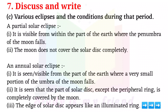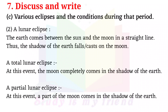An annular solar eclipse is seen from the part of the earth where only a very small portion of the umbra of the moon falls. The part of the solar disk except the peripheral ring is completely covered by the moon, and the edge of the solar disk appears like an illuminated ring. A lunar eclipse occurs when the earth comes between the sun and the moon in a straight line, and the shadow of the earth falls on the moon. In a total lunar eclipse, the moon completely comes into the shadow of the earth. In a partial lunar eclipse, only a part of the moon comes into the shadow of the earth.